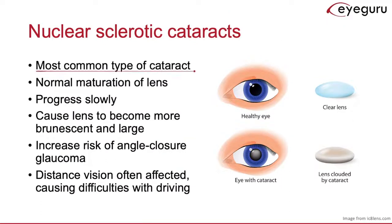Nuclear sclerotic cataracts are the most common type of cataract and they are age-related, meaning they are an inevitable process related to normal maturation of the lens. Often these progress slowly and over time can cause the lens to become brunescent, or yellow-brown. Cataracts also increase the size of the lens, which can push against the iris and close the iridocorneal angle, increasing the risk of angle closure glaucoma. These cataracts are most problematic when driving, particularly at night, due to glare.